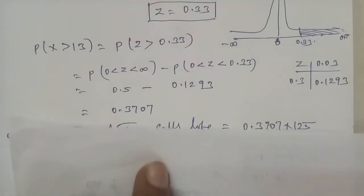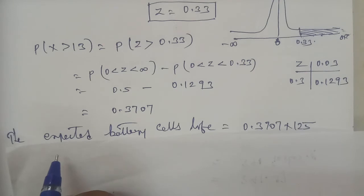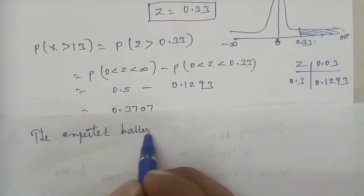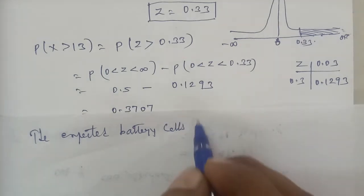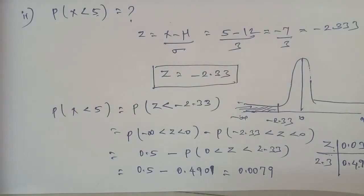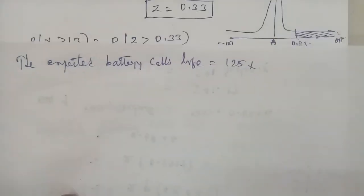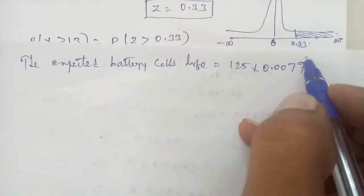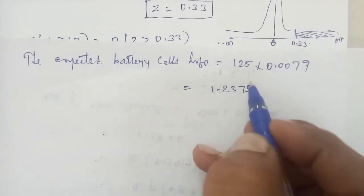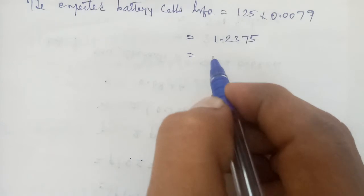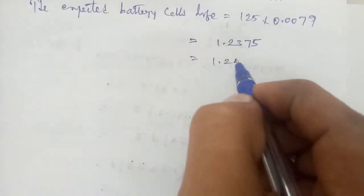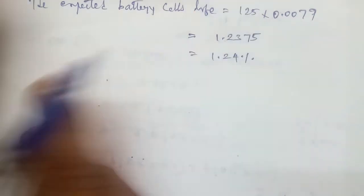Expected battery cells with life less than 5 hours = 0.0079 × 125 = 0.9875, approximately 1 cell.